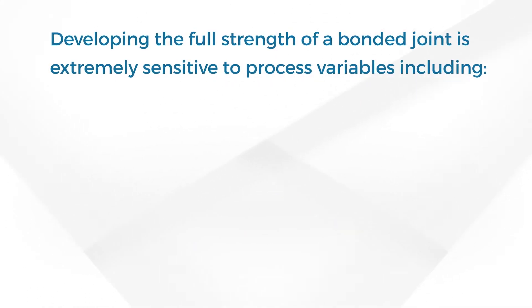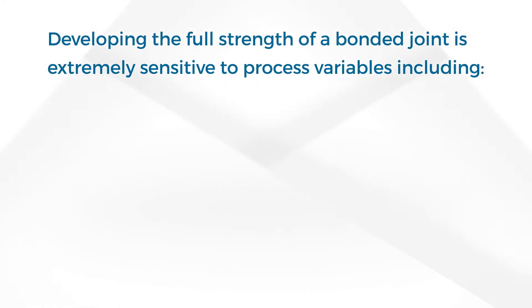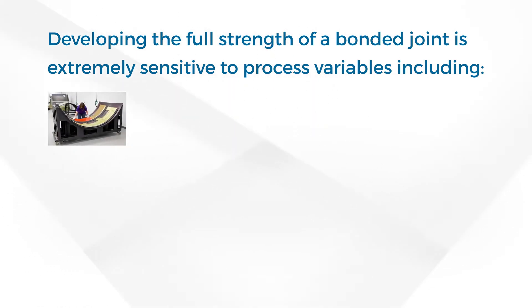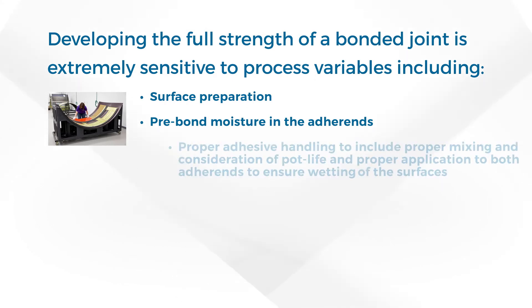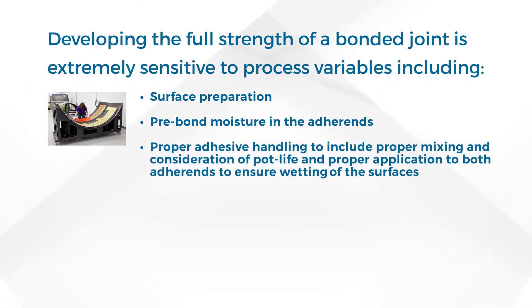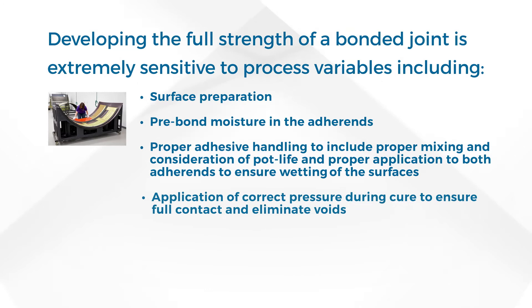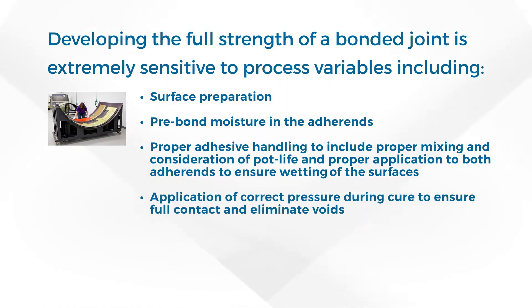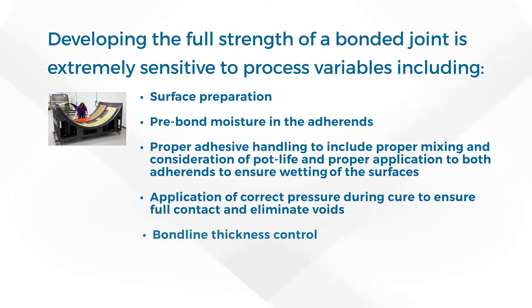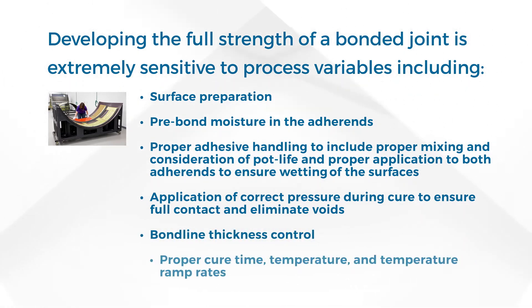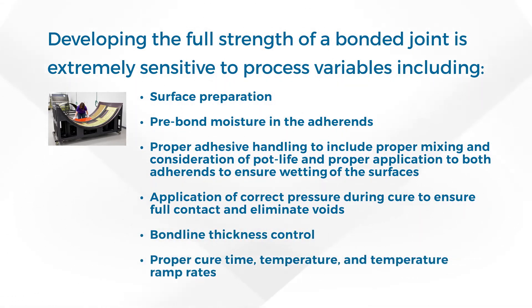Developing the full strength of a bonded joint is extremely sensitive to process variables including surface preparation, pre-bond moisture in the adherents, proper adhesive handling including proper mixing and consideration of pot life, and proper application to both adherents to ensure wetting of the surfaces. Application of correct pressure during cure ensures full contact and eliminates voids, along with bond line thickness control, proper cure time, temperature, and temperature ramp rates.